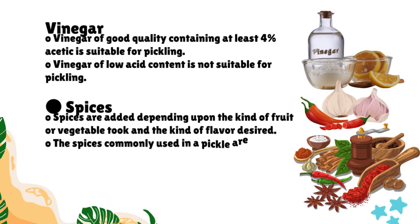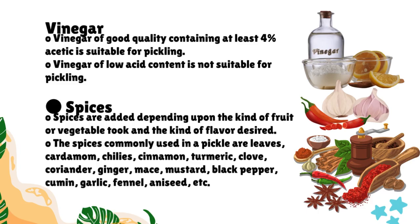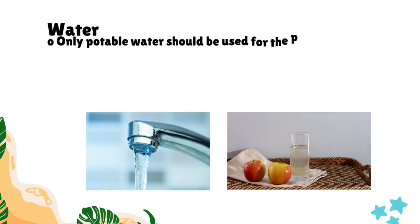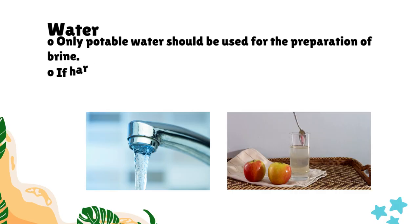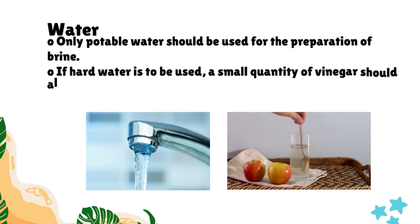Spices are added depending upon the kind of fruit or vegetable and the kind of flavor desired. The spices commonly used in a pickle are leaves, cardamom, chilies, cinnamon, turmeric, clove, coriander, ginger, mace, mustard, black pepper, cumin, garlic, fennel, aniseed, etc.